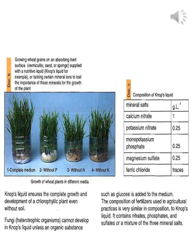Document C shows the composition of Nobs liquid. You do not need to memorize this table, but note that any plant fertilizer contains chemicals such as calcium nitrate and potassium nitrate — which provide nitrogen — monopotassium phosphate — which provides phosphorus — magnesium sulfate — which provides sulfate — and ferric chloride, which provides iron ions, all for proper growth of green plants.